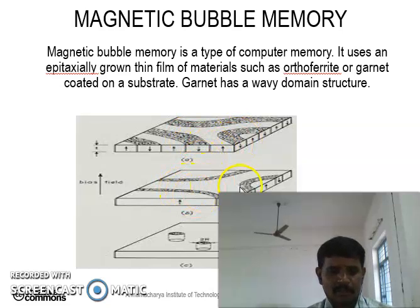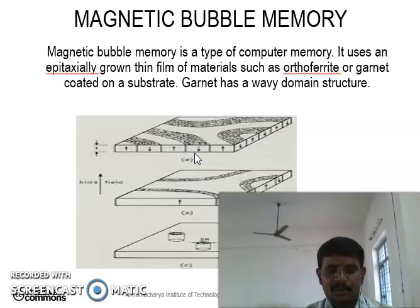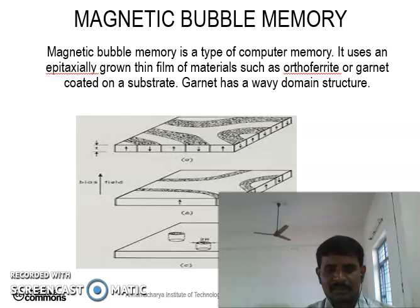Magnetic bubbles are in nanometer size. The magnetic bubbles are similar to the magnetic disk memories which are used in computers. The magnetic bubbles are soft magnetic materials and the magnetic domains with a few micrometers in diameter, and they are embedded in a matrix form of different orientations.